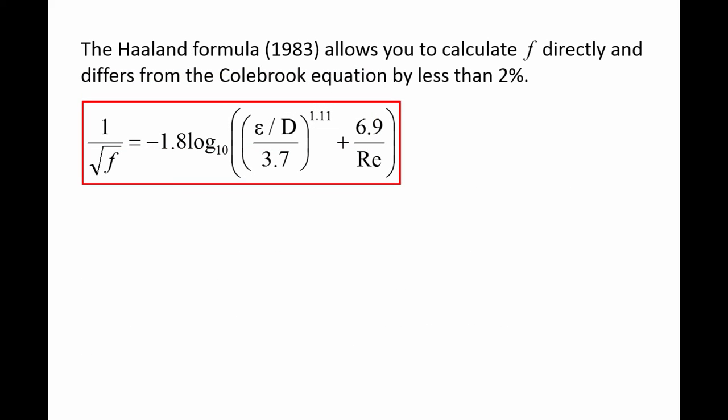Researchers have also developed formulas that allow you to calculate f directly. One such formula is the Haaland equation, which differs from the Colebrook equation by less than 2%. It has the advantage of allowing you to calculate the friction factor directly if you know the relative roughness and Reynolds number without needing to perform a time consuming iterative process.